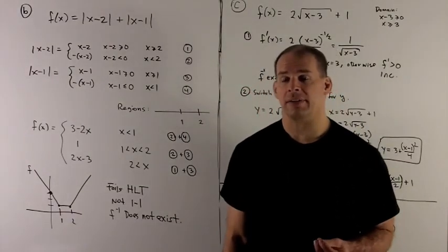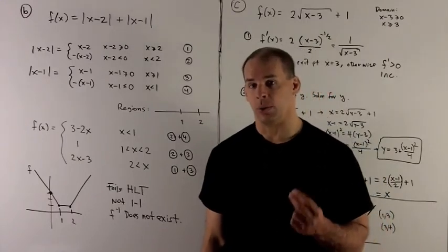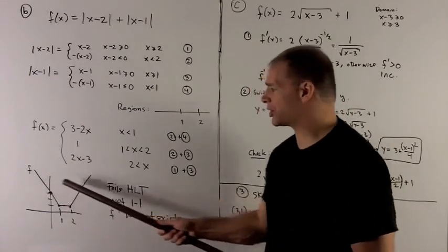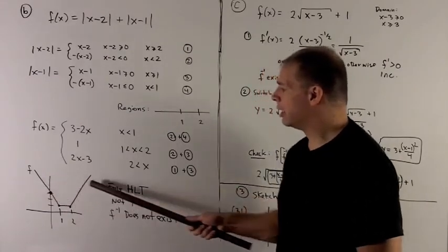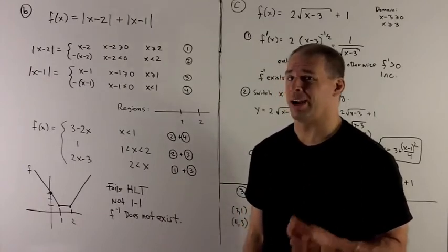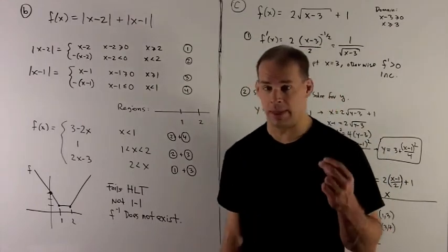So does this function have an inverse? Well, the answer is no, because it's not 1 to 1. It's going to fail the horizontal line test. If I take any horizontal line above 1, we're going to hit the graph in more than 2 spots. So it's not 1 to 1, therefore it can't have an inverse. And then we're done.